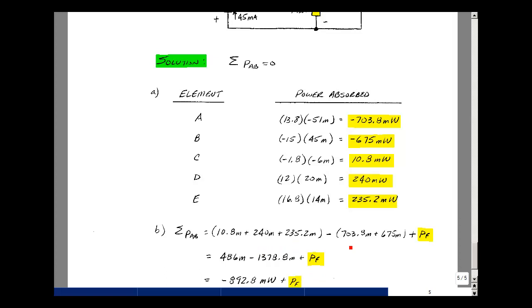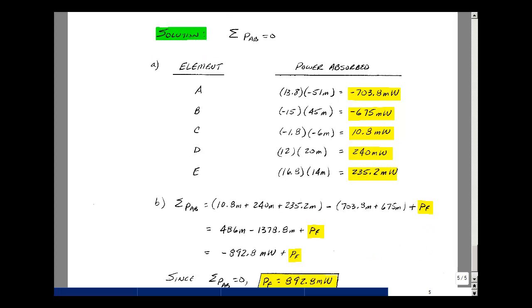Let's add up all the negative terms: 703.8 milliwatts and 675 milliwatts. And then lastly, add to that the power absorbed by element F. This turns out to be 486 milliwatts. This turns out to be minus 1378.8 milliwatts, so when I add those together, I get negative 892.8 milliwatts.